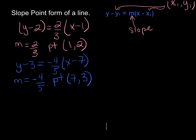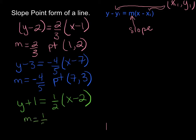Thirdly, let's have a look at this one, where we've got y plus 1 equals 1 half times x minus 2. This question looks slightly different than the ones before, simply because we've always had a minus, and now all of a sudden we have a plus. The slope is 1 over 2, and the point this line passes through is actually 2 comma negative 1.